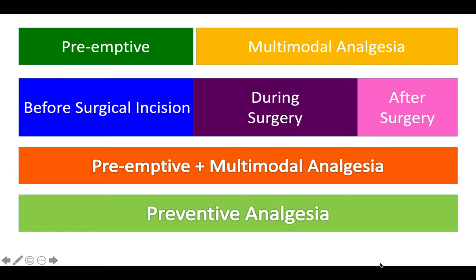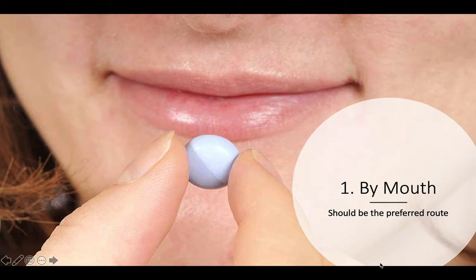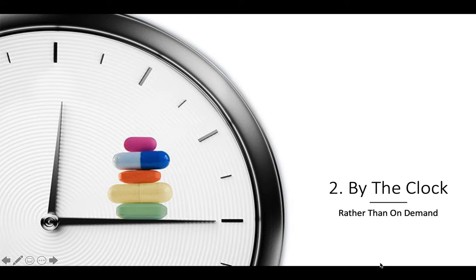Preventive analgesia is a term used in pain management. It is basically a combination of pre-emptive analgesia — analgesia delivered before the surgical incision — and multimodal analgesia used during surgery and in the post-operative period. The World Health Organization has emphasized using five phrases for correct use of analgesics. The first is 'by mouth', delivering pain medication orally. Second is delivering medication 'by the clock' rather than on demand, at least for the first 48 to 72 hours.